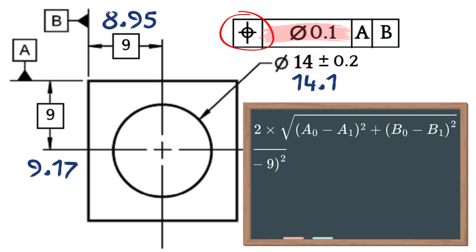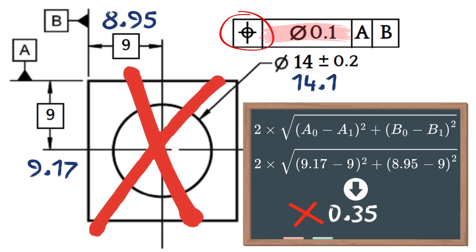In our case, it will be 2 times the square root of 9 minus 9.17 squared, plus 9 minus 8.95 squared. The result is 0.35, which is the distance of the bore from its true position. The part is non-conforming in this case, since 0.35 is larger than 0.1, which is the maximum allowed deviation.